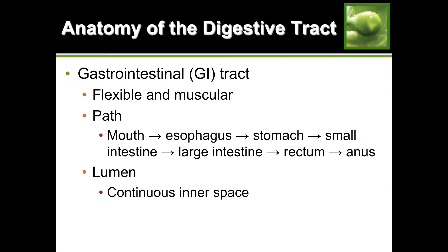You need to know the details of this path. It starts in the mouth, then goes to the esophagus, then the stomach. The small intestine is divided into three sections: the duodenum, the jejunum, and the ileum - an easy way to memorize this is DJ ileum. The large intestine or colon is also divided into three sections: ascending colon, transverse colon, and descending colon.